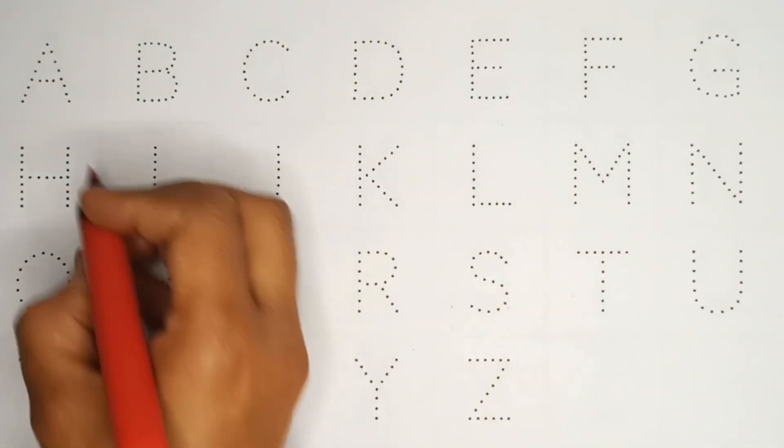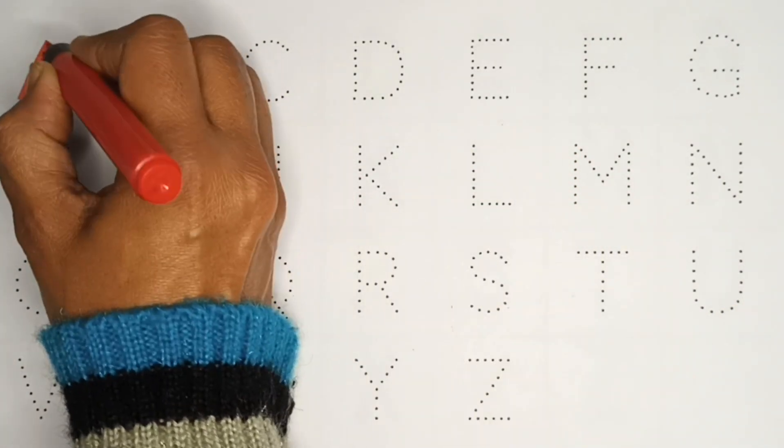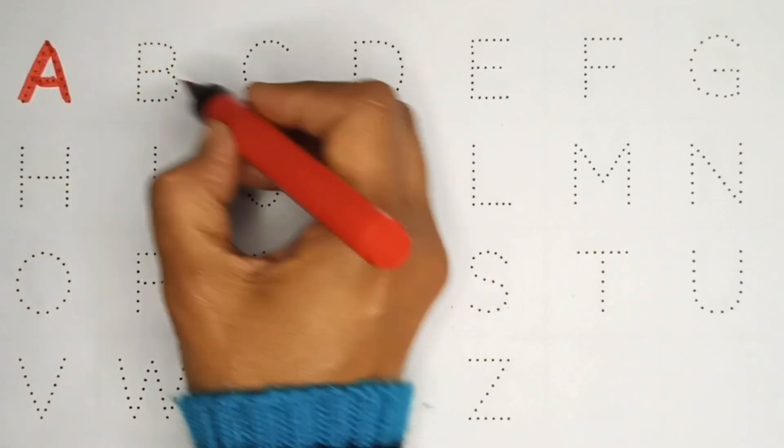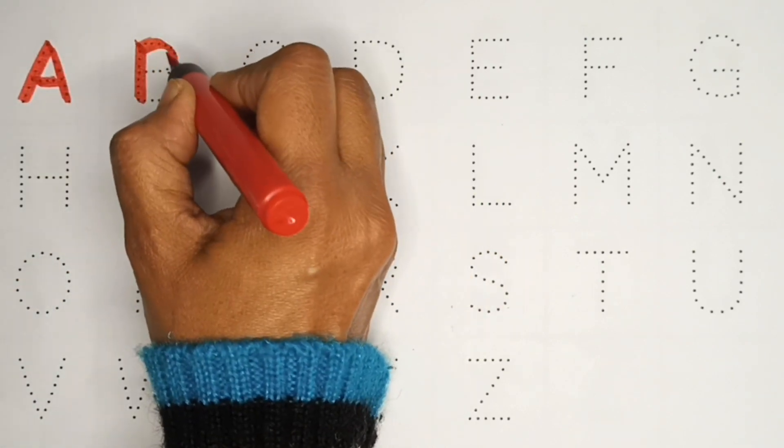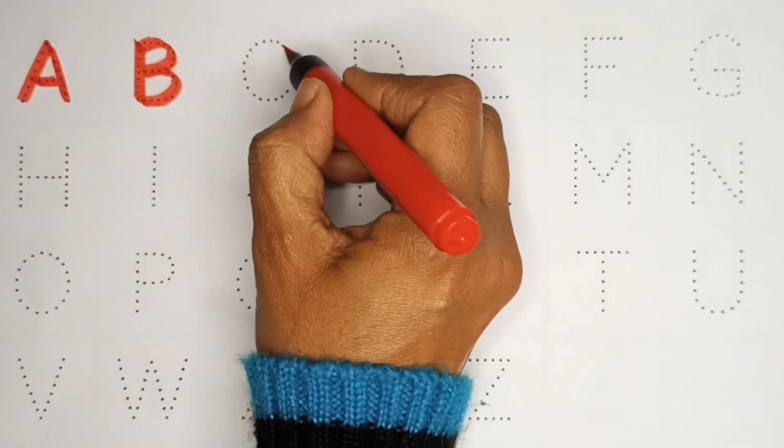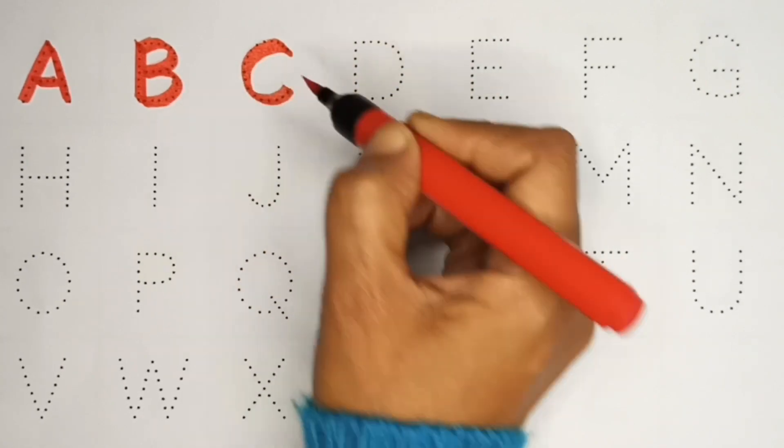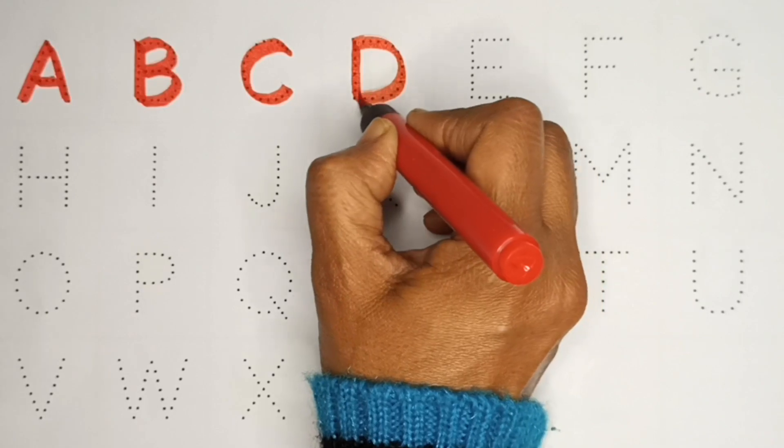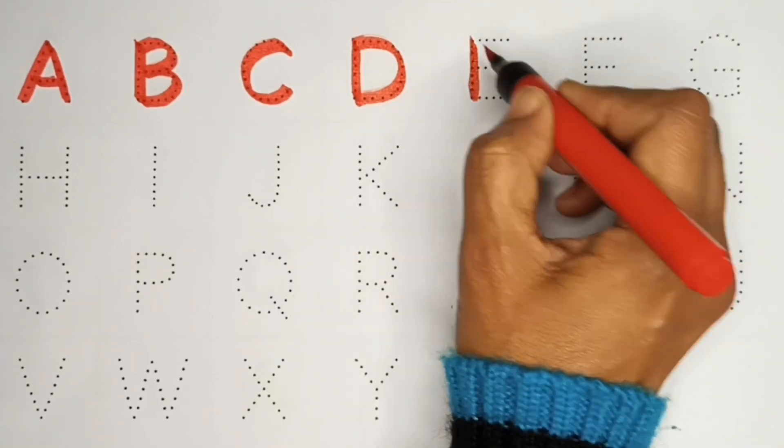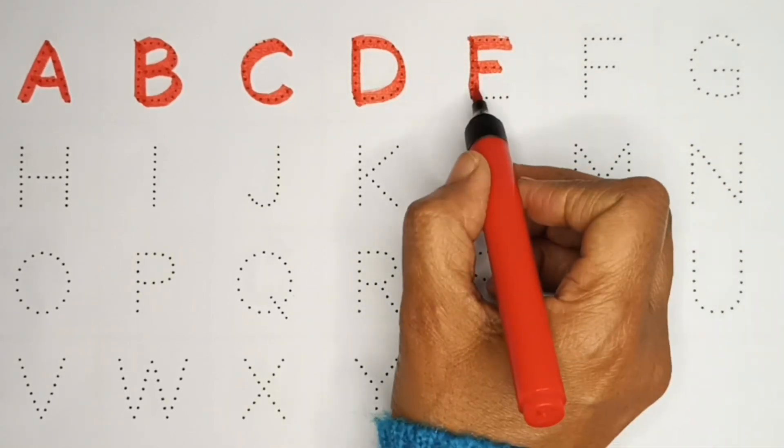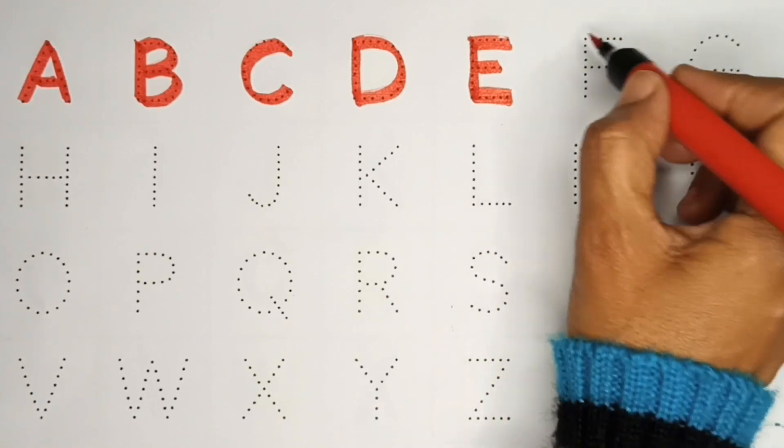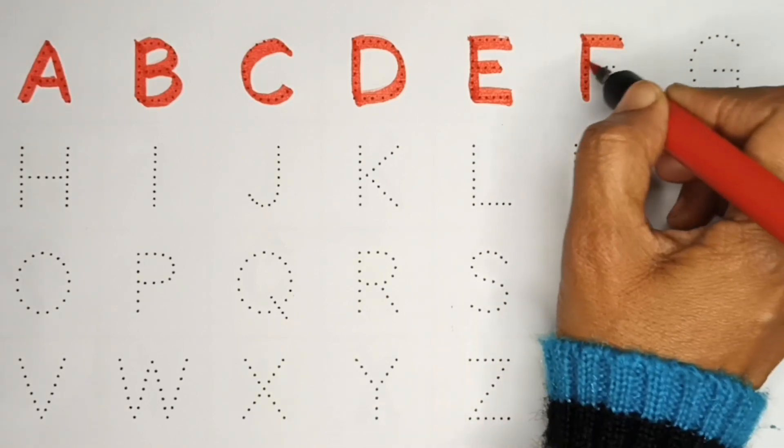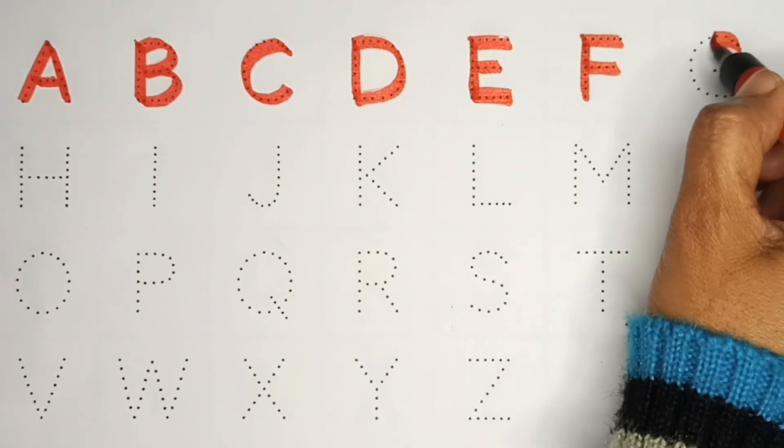Red color. A. A for apple. B. B for ball. C. C for cat. D. D for dog. E. E for elephant. F. F for fish. G.